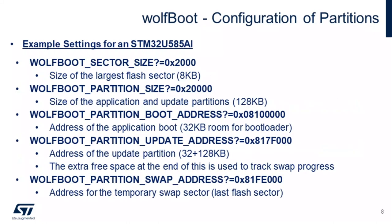This example sets up the partitions. The sector size is 8K, which is defined by the onboard flash. We reserve some space for the bootloader and the application and update partitions. Then we reserve a little bit of space for the swap, so you can swap between these two partitions. This is just an example setup.